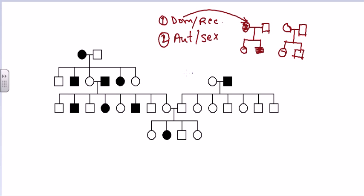Looking at the pedigree: here a parent is affected and children are affected — so far following the rule of autosomal dominant. But in this category, we can see parents are unaffected but a child is infected. This goes against the dominant rule, so it is not dominant. Therefore, this is a recessive trait.